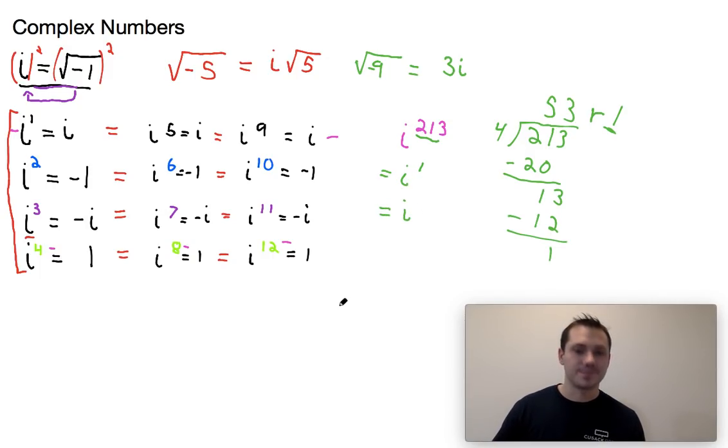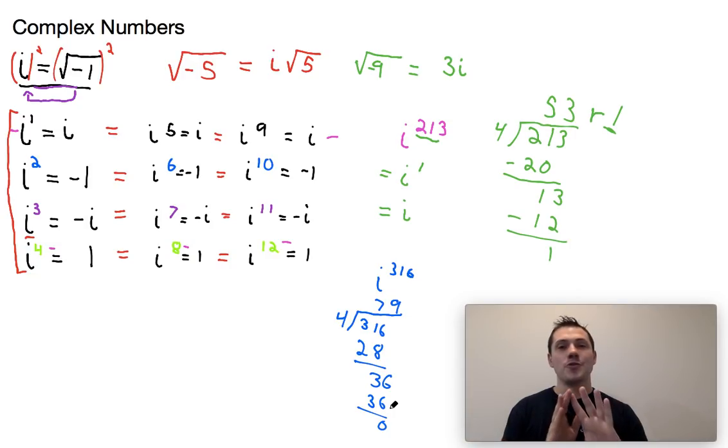Let's do a couple more examples. Maybe we had i to the 316th power. All right, so we're going to do the same thing where we just try to figure out how many times does four go into 316? Can't go into three, goes into 31 seven times. Four times seven is 28. When we subtract that, we get three. We bring down the six, 36. Four goes into 36 exactly nine times. Boom, it works out perfectly. No remainder. There's no remainder. That simply just means it's the same as i to the fourth or i to the eighth or i to the 12. All those would have no remainder as well. So i to the 316th is the same as i to the fourth, which is just equal to one.